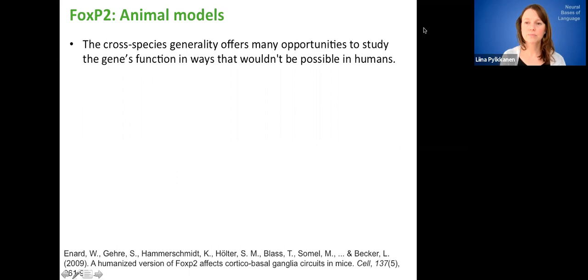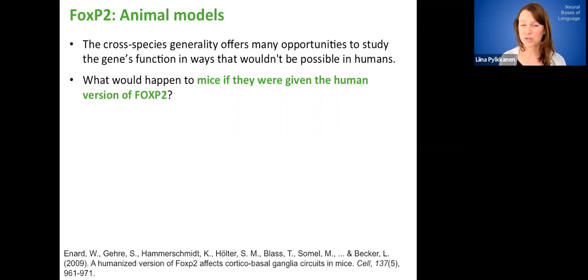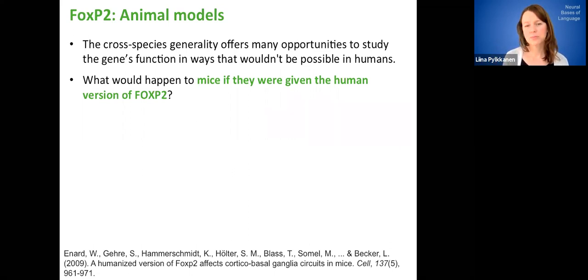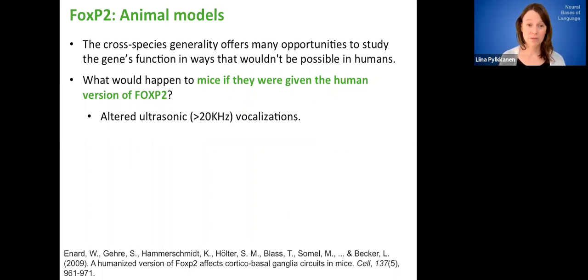And so here, I'm just going to give you a bit of a feel for the types of questions that researchers have asked. So for example, it's been investigated what would happen to mice if they were given the human version of FOXP2. So all these species have slightly different versions of FOXP2. And so what happens is that their vocalization, specifically their ultrasonic vocalization, so these are in a range that humans can't hear, are altered. Okay, so that feels a little languagey.